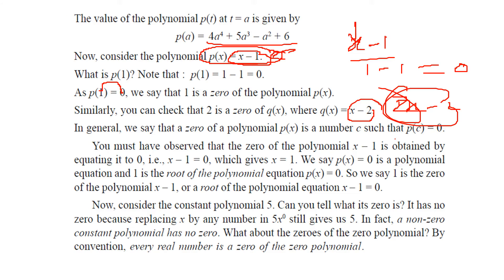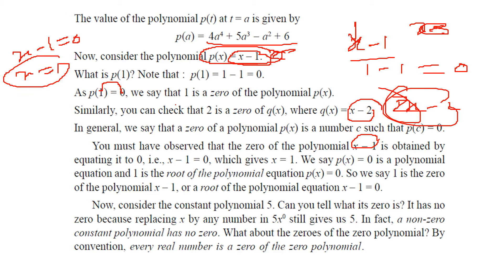Also, if x minus 1 equal to 0, then x will be equal to 1. This x equal to 1 is known as the root of that polynomial. x equal to 1 is the root of the polynomial. If I write x minus 2 equal to 0, x will be equal to 2. So x equal to 2 is the root of this polynomial.